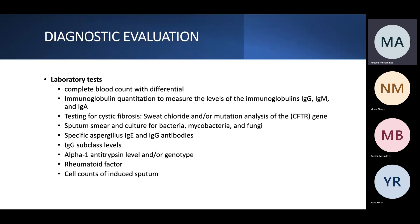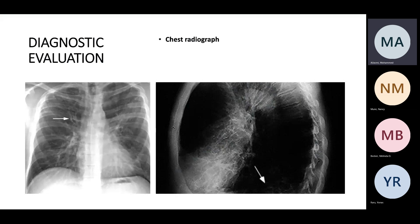Labs: if a patient with bronchiectasis comes to the clinic, you need to figure out what's going on and whether something is fixable. Start with CBC with differential looking for infection. Do immunology workup — immunoglobulins IgG, IgM, IgA — test for cystic fibrosis, and do culture for sputum including mycobacteria, other bacteria, and fungi. Also check IgG subclass levels, alpha-1 antitrypsin, rheumatoid factor, and cell count of induced sputum looking for eosinophilia and atopy.